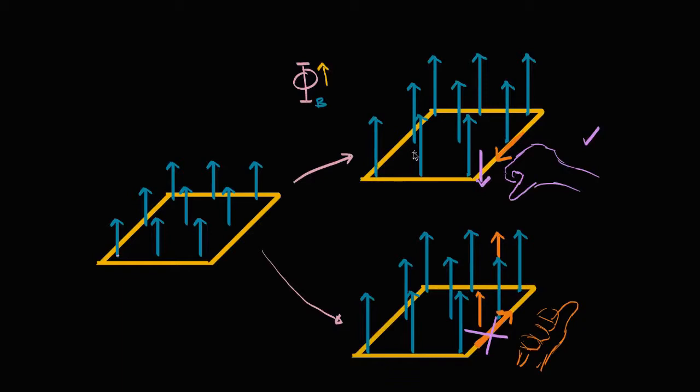We take our right hand, point our thumb in the direction of the current, and we see that the clockwise current would induce a magnetic field that would decrease the flux — a magnetic field going downward. The current in that direction, when you take your right hand and put it along here, going in the clockwise direction, your fingers would coil around that way.